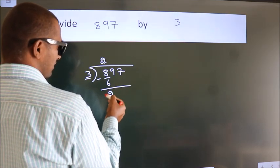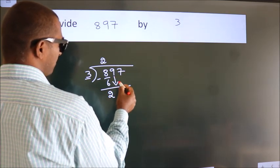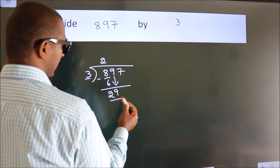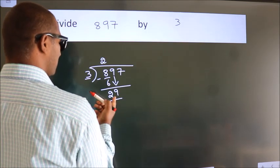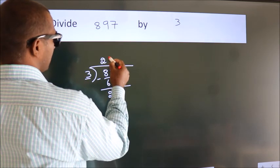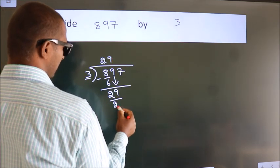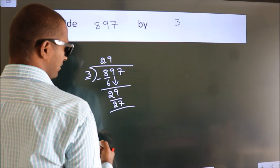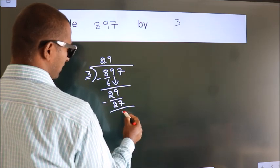After this, bring down the beside number. So, 9 down. So, 29. A number close to 29 in 3 table is 3 9s, 27. Now, we subtract. We get 2.